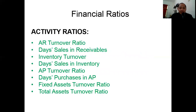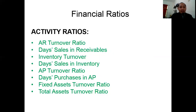The activity ratios are: accounts receivable turnover ratio, days sales in receivables, inventory turnover, days sales in inventory, AP turnover, days purchases in AP, fixed assets turnover ratio, and total assets turnover ratio. Financial ratios are always included in the CPA exam, so it's very important to understand the concepts and know how to apply the formulas.